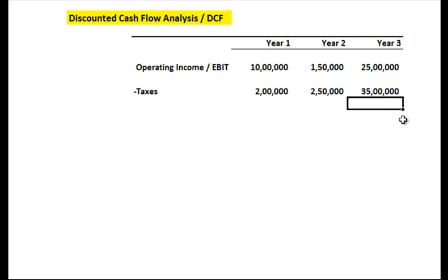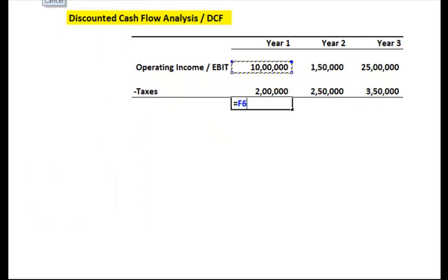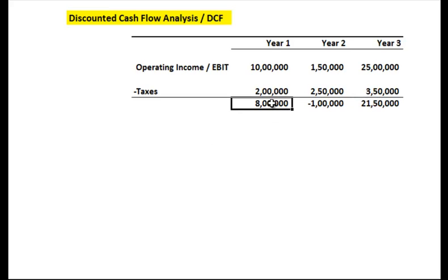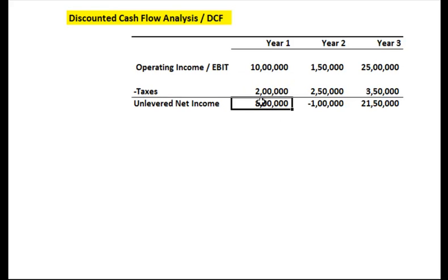In year three you paid 3.5 lakhs in taxes. So you subtract the taxes you're paying from your operating income, and what's left is called the unlevered net income. The reason it's called unlevered is that this number still has your interest expense in it — EBIT is earnings before interest and tax. We are not subtracting interest here, only tax, so we call this unlevered net income.